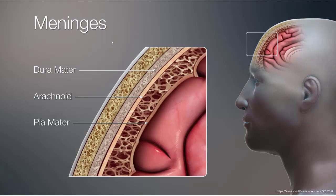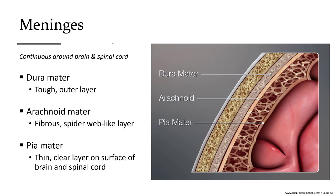Meninges are the name for the three protective layers surrounding the central nervous system. The outermost meningeal layer is the dura mater, located just under the bone of the skull for the brain, or vertebrae for the spinal cord. This layer is fairly thick, like cardstock paper, but much stronger.